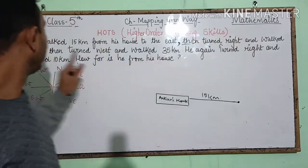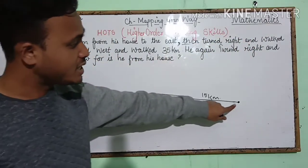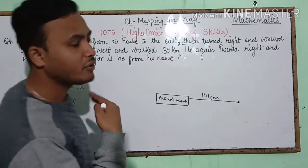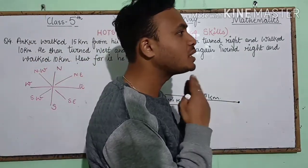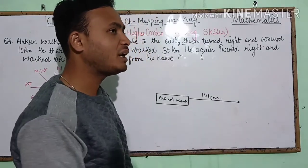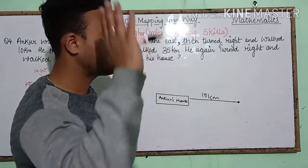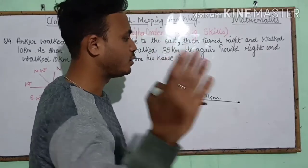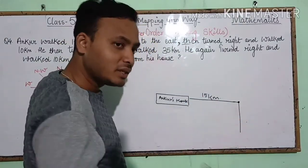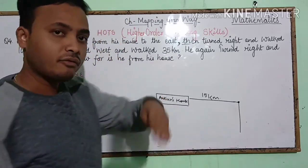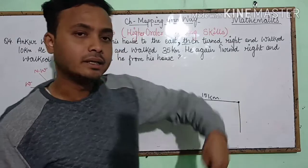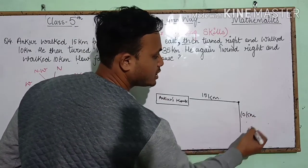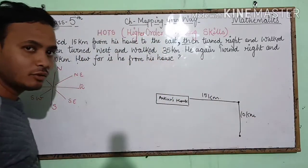Then he turned right and walked 10 kilometers. His face is toward the east side. If my face is that way, then my right hand is downward — this side. So he turned right, faced that direction, and walked 10 kilometers downward, reaching a new point.